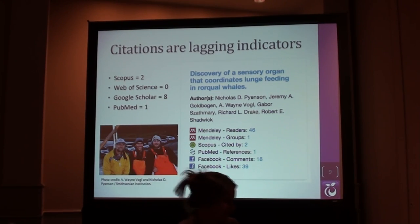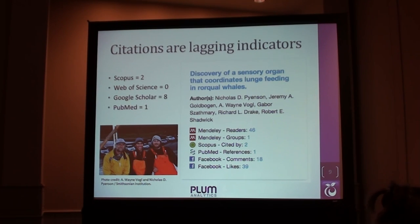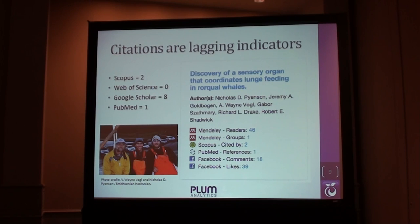There are well-known problems with classic citation analysis — we know them, there are a lot of them. But the real point is they lag. By the time you publish a work and other people in the future cite it, it can be as much as three to five years. So if you're saying how was your research, it's like, well, I'll tell you in five years. Science is moving way too fast for that. If you publish something last year, what's been going on in the meantime?